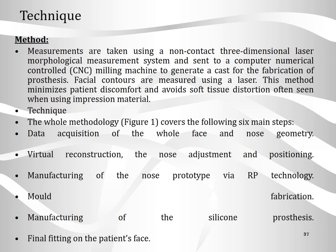Coming to the technique, measurements are taken using the non-contact 3D laser morphological measurement system and sent to the computer numerical control CNC milling machine to generate a cast for the fabrication of the prosthesis. Facial contours are measured using a laser. This method minimizes patient discomfort and avoids soft tissue distortions often seen when using impression materials. The technique basically has six steps, which will be discussed in the next slide.